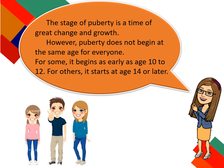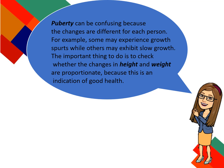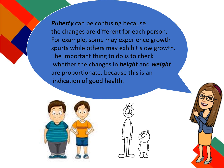For some, it begins as early as age 10 to 12. For others, it starts at age 14 or later. Puberty can be confusing because the changes are different for each person. For example, some may experience growth spurts while others may exhibit slow growth. The important thing to do is to check whether the changes in height and weight are proportionate, because this is an indication of good health.